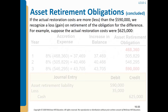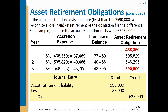There is also another situation. If the actual restoration costs are more than the expected value of $590,000 — for example, if the actual restoration costs were $625,000 — we recognize a loss on the retirement of the obligation for the difference of $35,000. The entry would be: debit Asset Retirement Liability, debit Loss $35,000, and credit Cash $625,000.